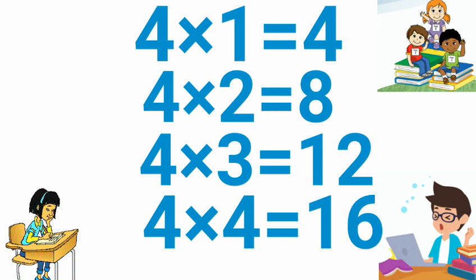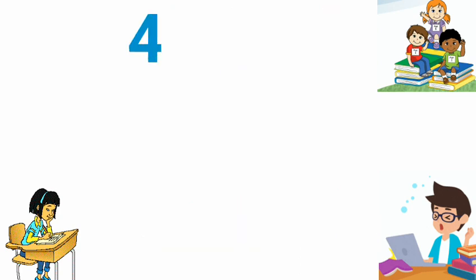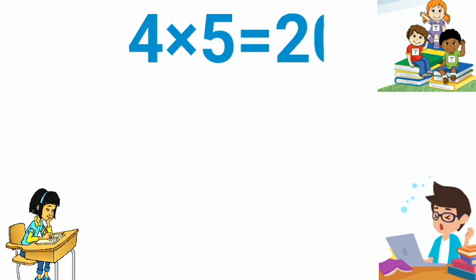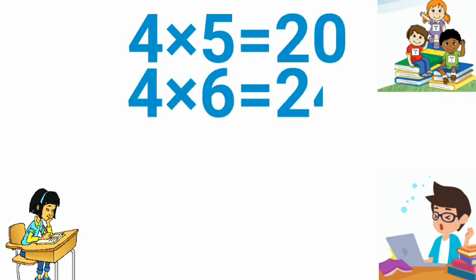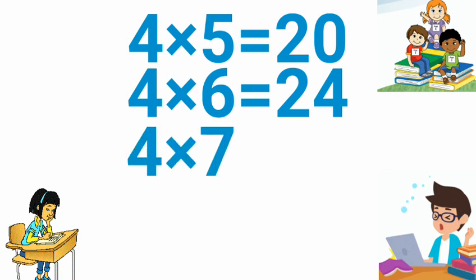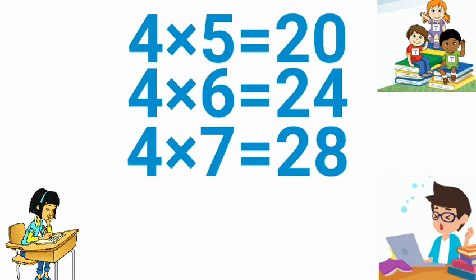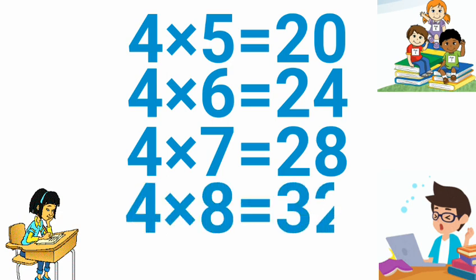4 1 is 4, 4 2 is 8, 4 3 is 12, 4 4 is 16, 4 5 is 20, 4 6 is 24, 4 7 is 28, 4 8 is 32.